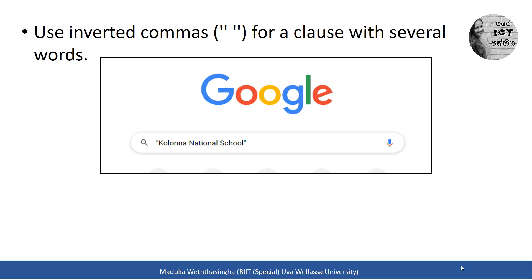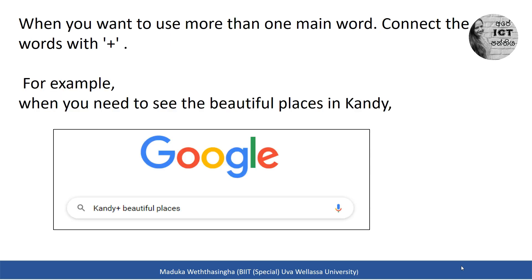The next tip is: when you want to use more than one main word, connect the words with a plus sign. For example, if you need to find beautiful places in Kandy, there are two main words — Kandy and beautiful places. You connect them using a plus sign: Kandy + beautiful places.